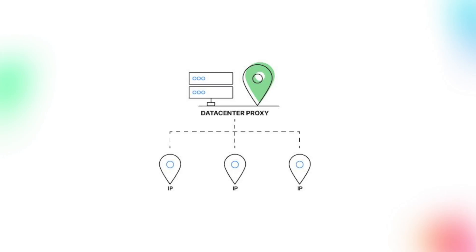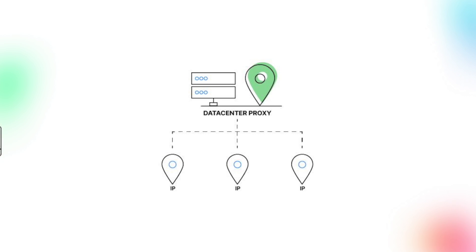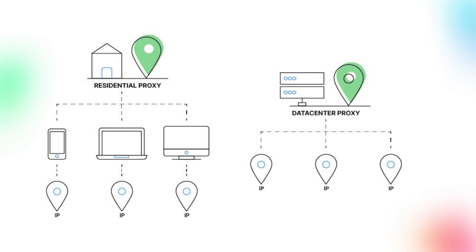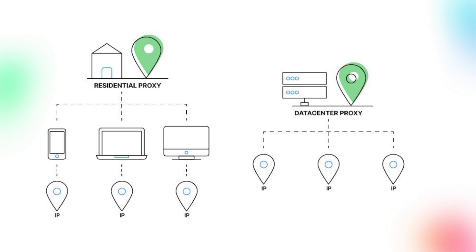The type of proxies most prone to getting blocked are datacenter proxies. They're easier to get blacklisted, but they're also cheaper. In many cases, they work just fine for your project. However, for websites that have advanced bot detection mechanisms, you might need to use either mobile or residential proxies.